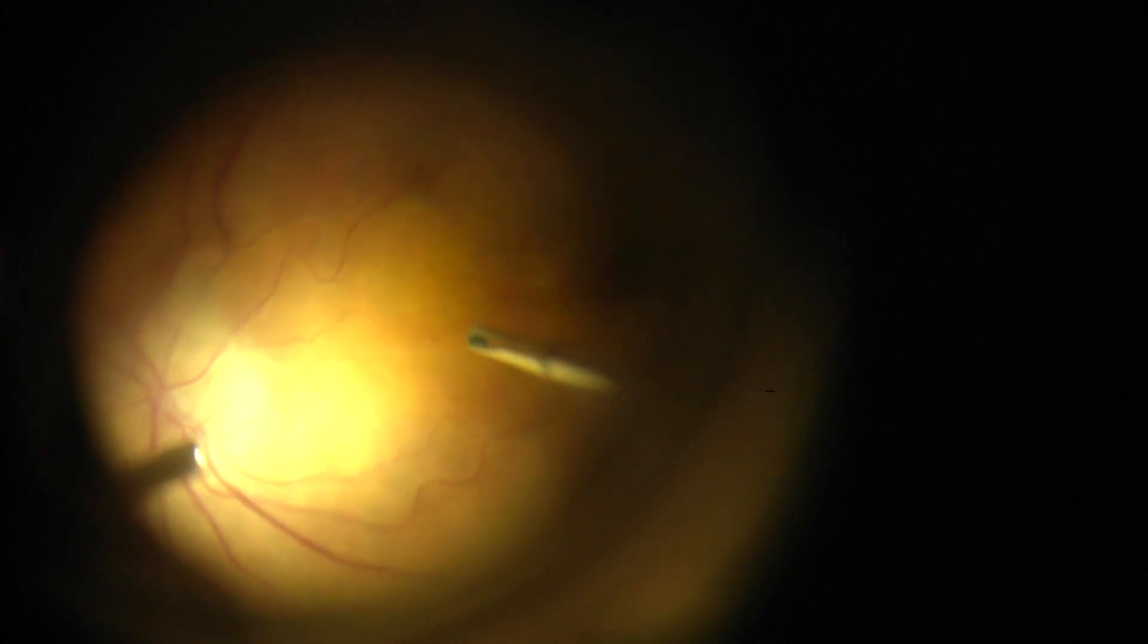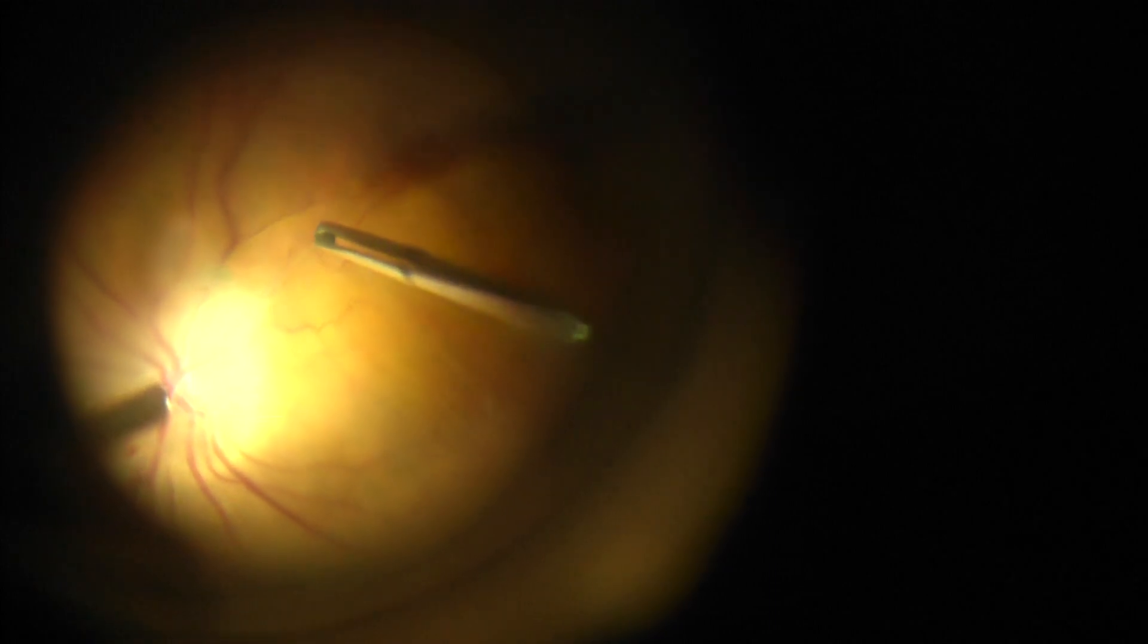Because his fovea was a little bit thin, it was a lamellar macular hole, I peeled his epiretinal membrane, trying to spare the fovea. This is the area where the membranes actually connect to the disc as well.